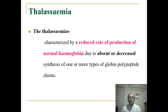At first, we go to our definition. Thalassemia is characterized by a reduced rate of production of normal hemoglobin, due to absent or decreased synthesis of one or more types of globin peptide chains.